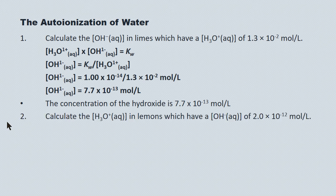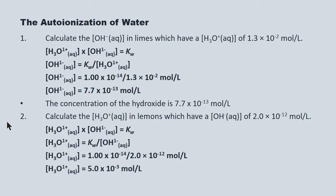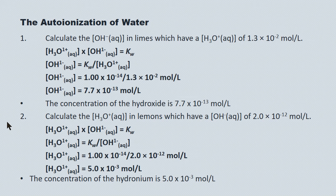Calculate the hydronium ion concentration where the hydroxide ion concentration is 2.0 times 10 to the minus 12 moles per liter. We start with our Kw equation, rearrange it for hydronium ion concentration, and substitute in both the Kw and the hydroxide ion concentration. We get a concentration of hydronium of 5.0 times 10 to the minus 3 moles per liter.